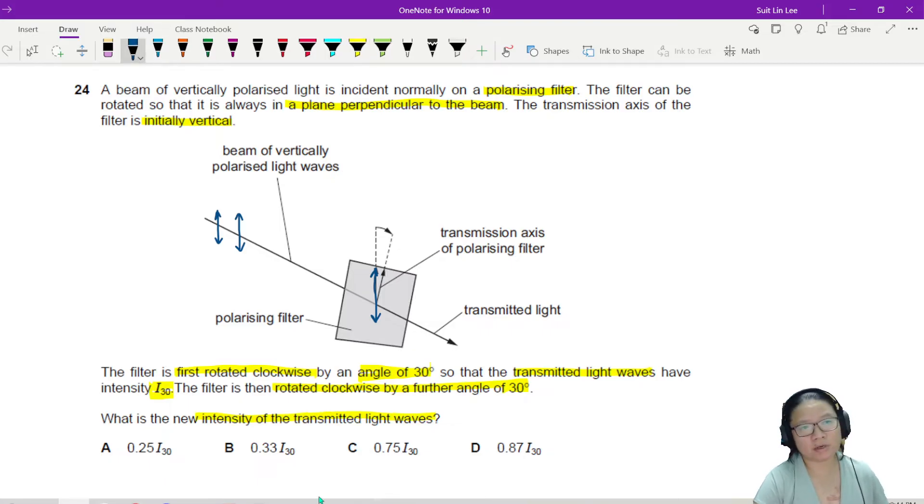So first thing I want to just make sure that we know how to use the Malus's Law equation. I is equal to I naught cos square theta. So you can look at it this way. To better understand this equation, I'm going to draw two diagrams.